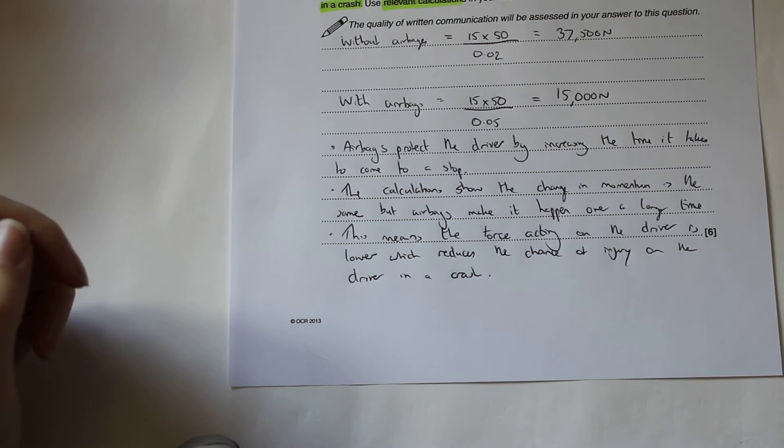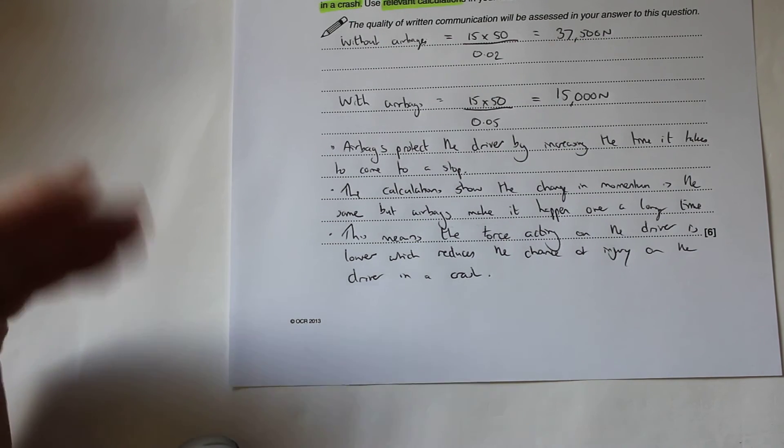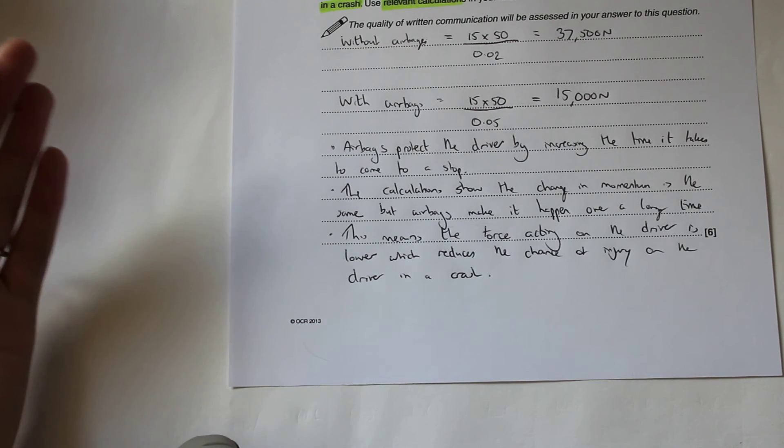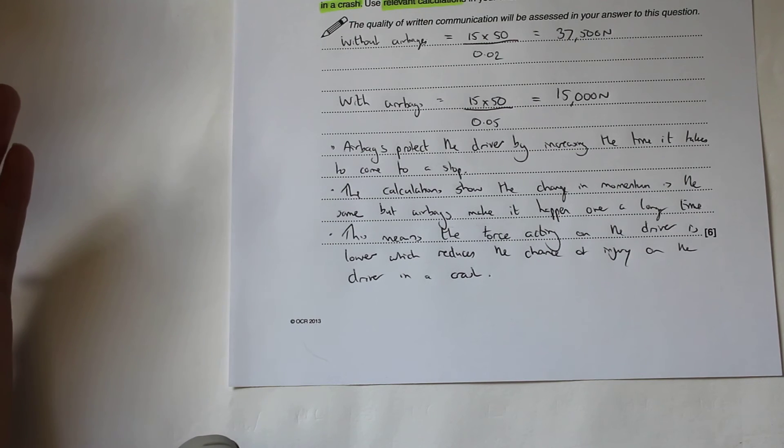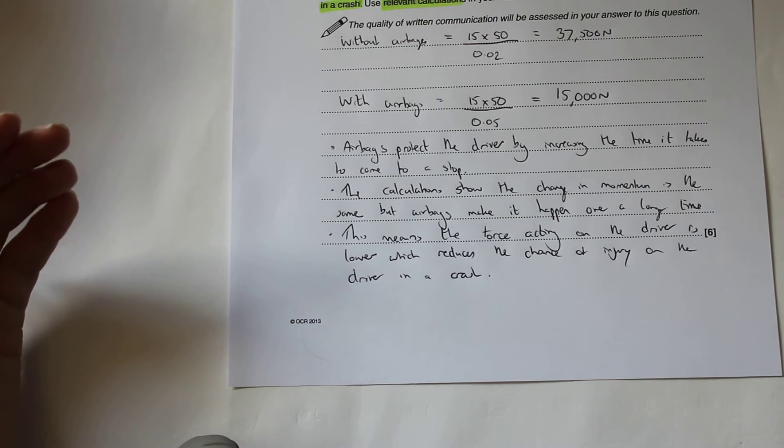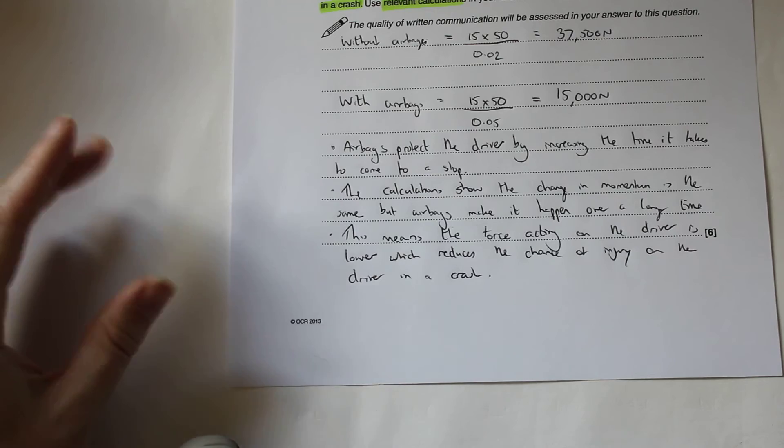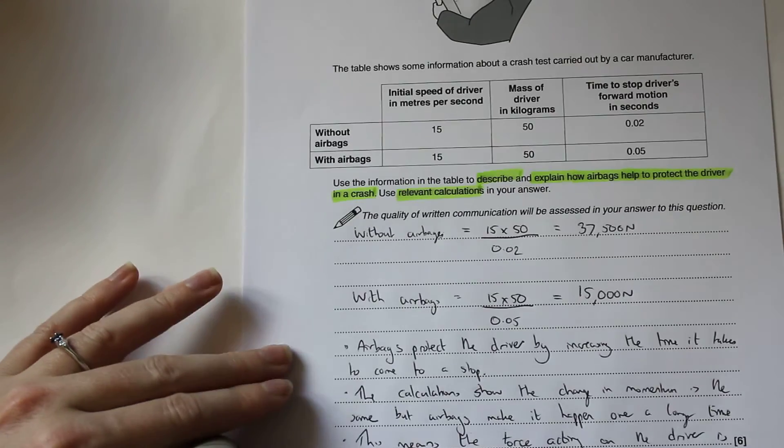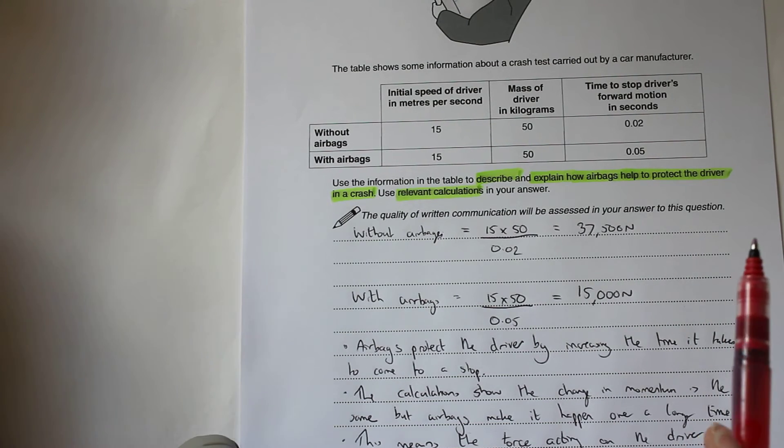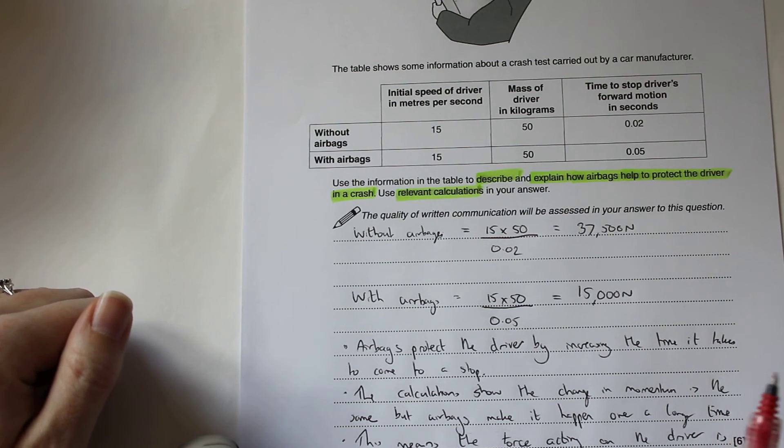So what we've got there then is the complete answer. If we have a look and see how this would be marked, for a level 1 answer, for 1 to 2 marks, you'd make any 2 points from what they call sections A and B on the mark scheme. Section A is looking at those basic ideas about what airbags do, so you could talk about airbags changing shape, absorbing energy, reducing injuries. Section B is using the actual table data in its raw form, so if from the table we were to be saying that the collision takes longer with an airbag, that's looking at your level 1 answers there.